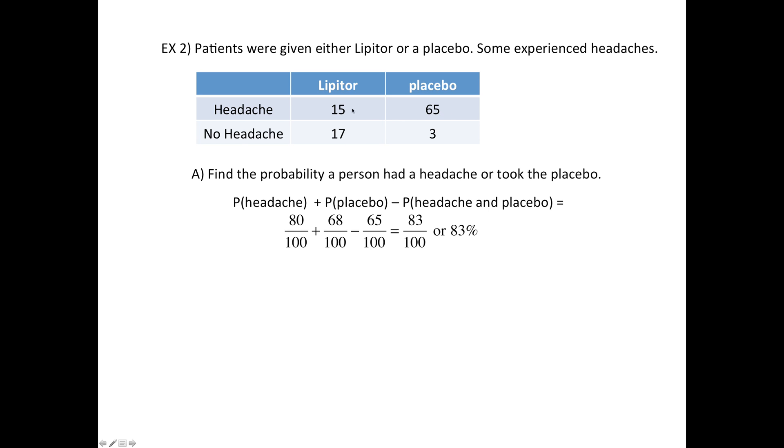So we would have the first 80 coming from the headache people, this row. Next is placebo, that's this column, 68. But then the 65 got counted twice, so we need to subtract that off. All of it's out of 100 because I added up the four squares.